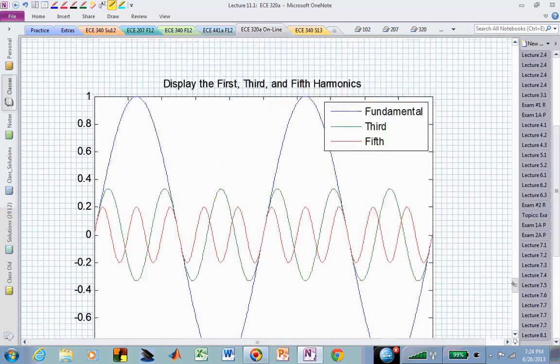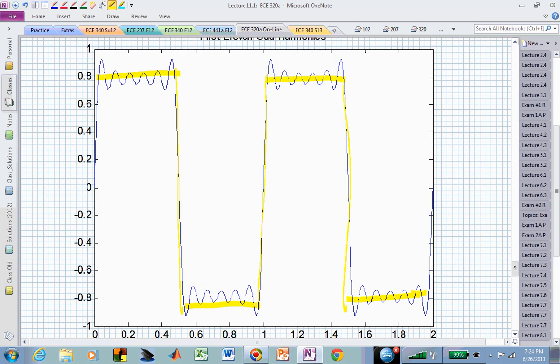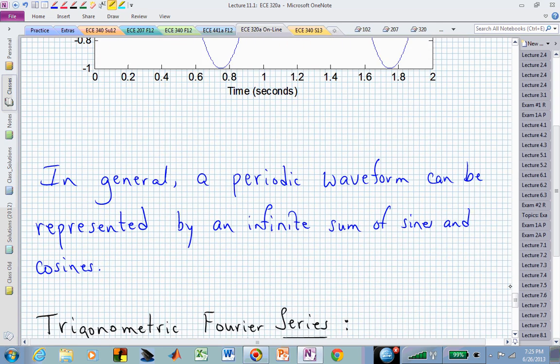What that shows us then is by adding up sines and cosines—in this particular case, we're just adding up sines, and in fact, we're just adding up the odd harmonics—that allows us to generate a more general or generic periodic waveform. If we take it the other way, a generic or general periodic waveform can be represented by an infinite sum of sines and cosines.